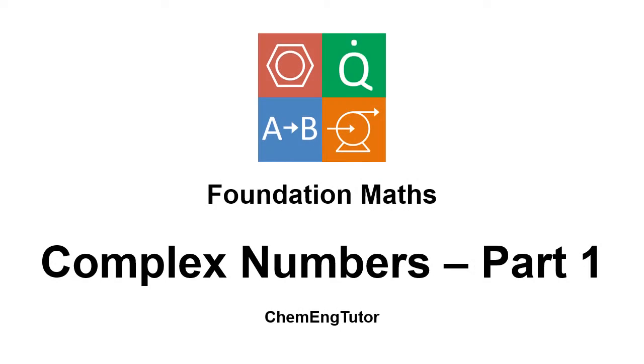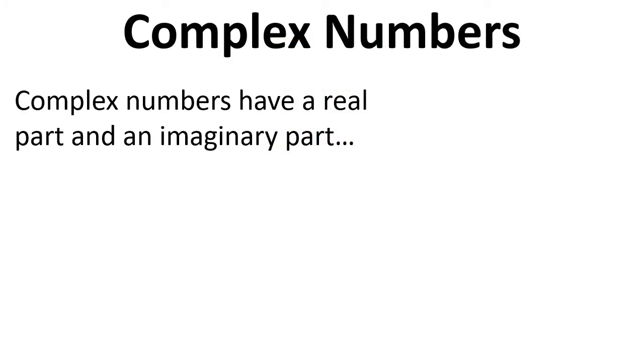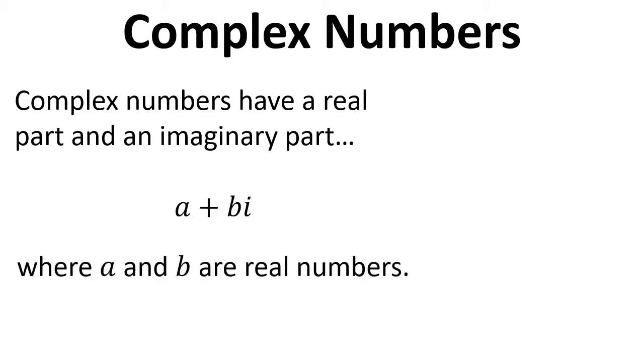In this video we're going to take a look at complex numbers. Complex numbers have a real part and an imaginary part and can be written down as a plus bi, where a and b are real numbers and i is the square root of negative 1.